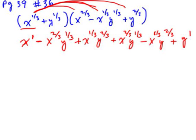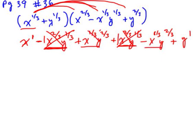Now we look for like terms, meaning they must have the same variables and the same exponents. Notice x to the two-thirds y to the one-third appears with a positive and a negative coefficient of one — they cancel out to zero. Similarly, x to the one-third y to the two-thirds and negative x to the one-third y to the two-thirds cancel out. So the final answer is x plus y.